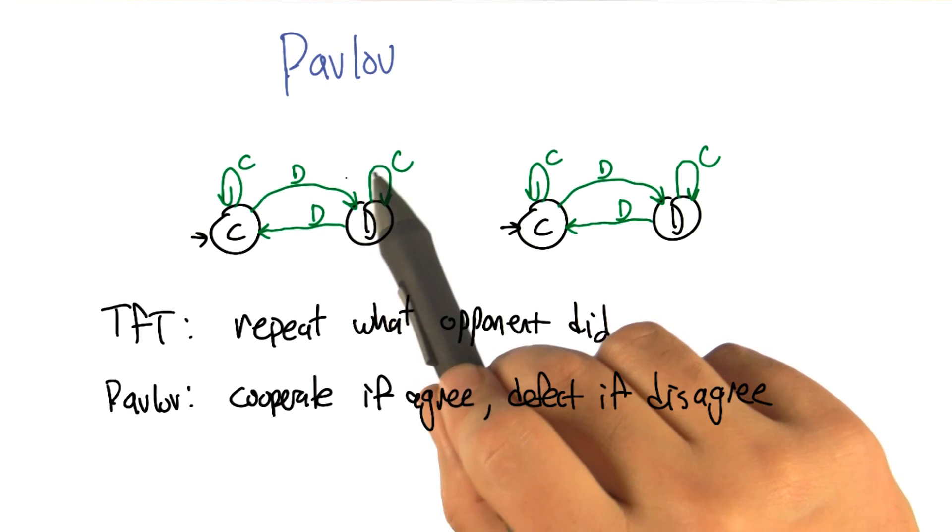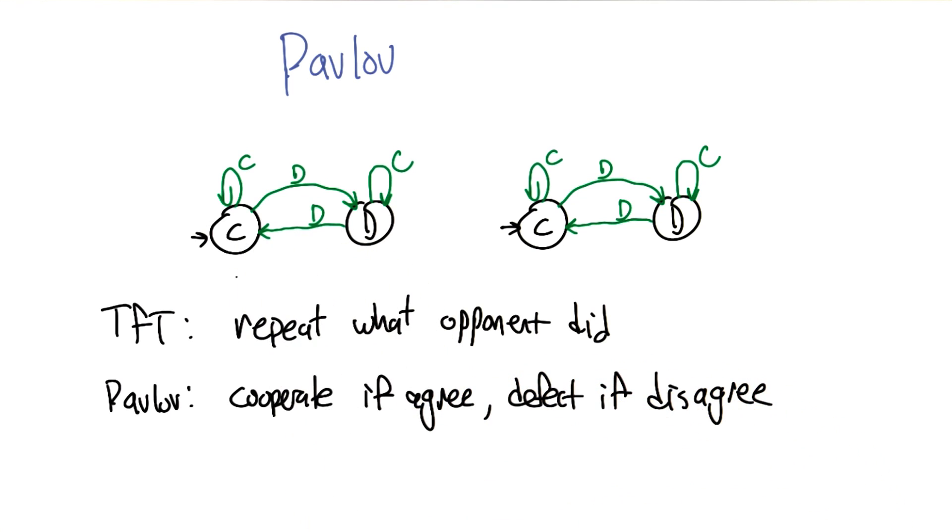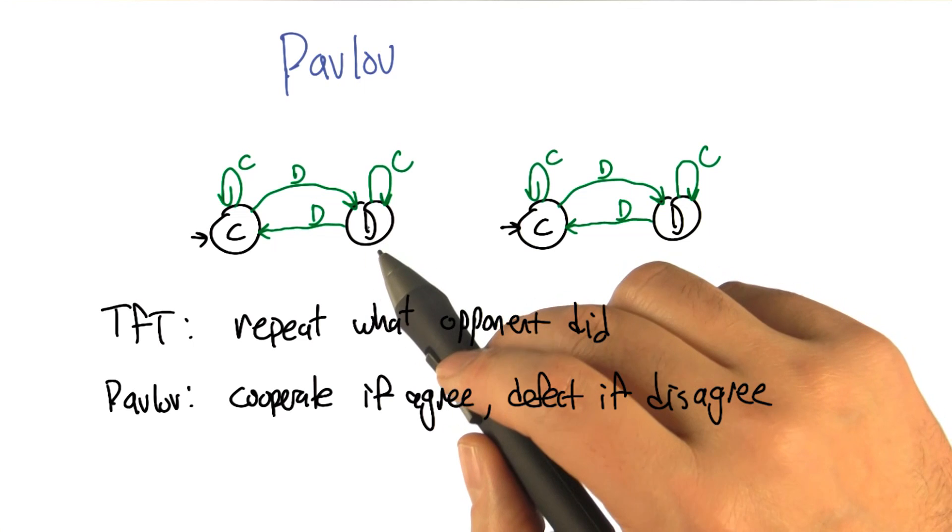Here it says if you cooperate with me, I will continue to defect against you. But if you defect against me, then I'm willing to cooperate with you. That's a little strange.